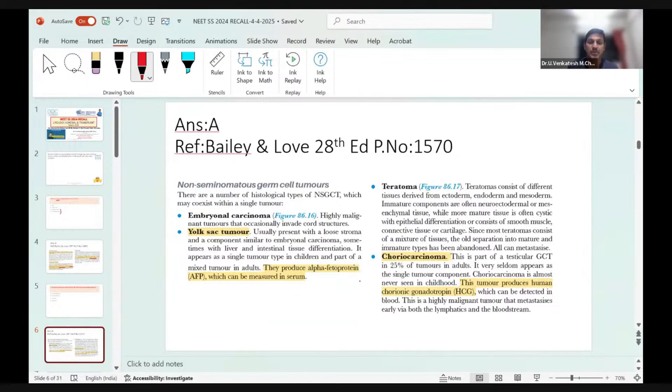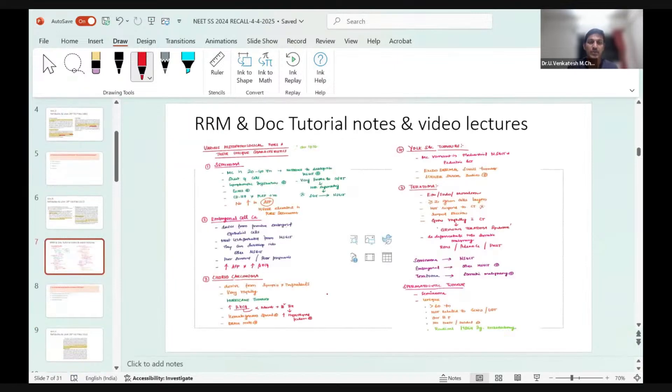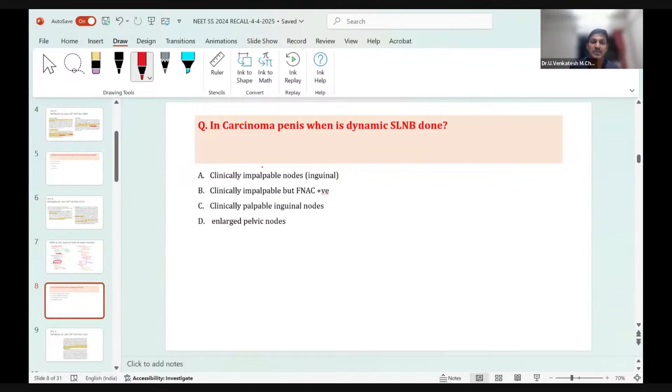Yolk sac tumor produces only alpha-fetoprotein, teratoma does not produce any markers, and choriocarcinoma produces only beta HCG. One more important point: a pure seminoma never produces AFP. Seminoma with AFP is never elevated in seminoma. This question was directly taken from Bailey and Love, which was also reflected in our classes.